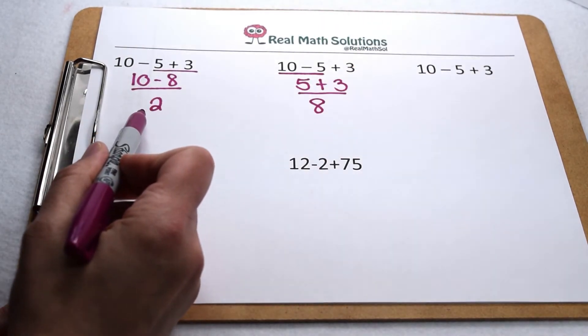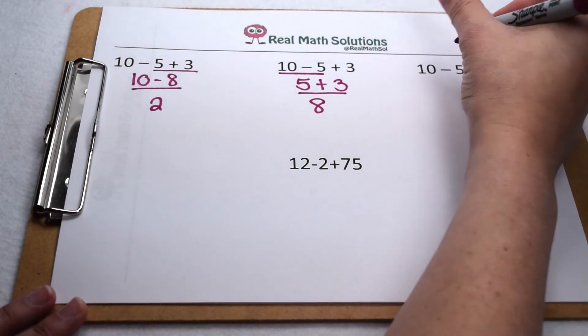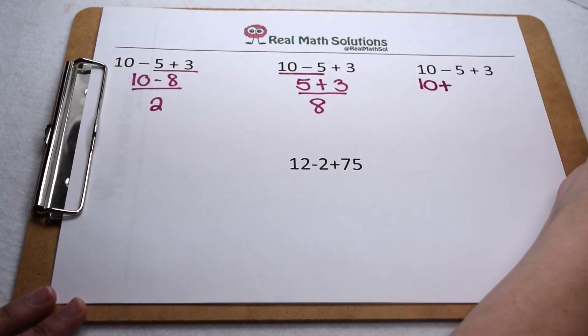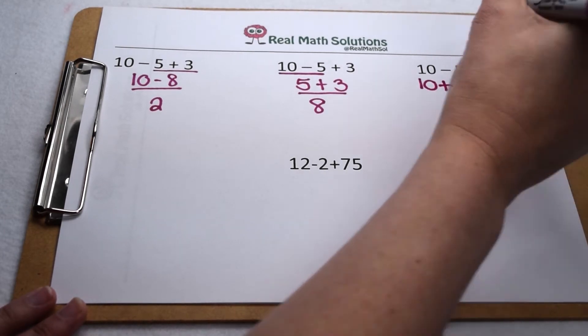Now let's try using the idea that subtraction can be rewritten as adding the opposite. That means instead of 10 minus 5, my 10 is going to stay the same, subtracting is going to become addition, and positive 5 is going to become negative 5, and then the positive 3 continues.